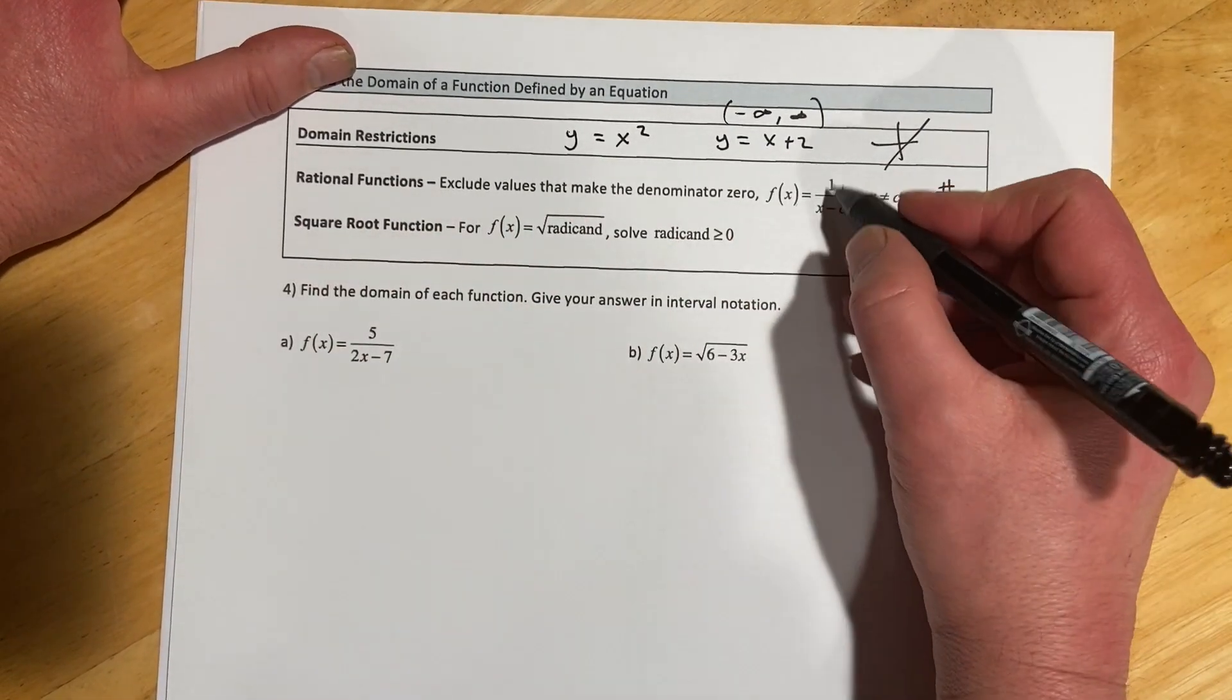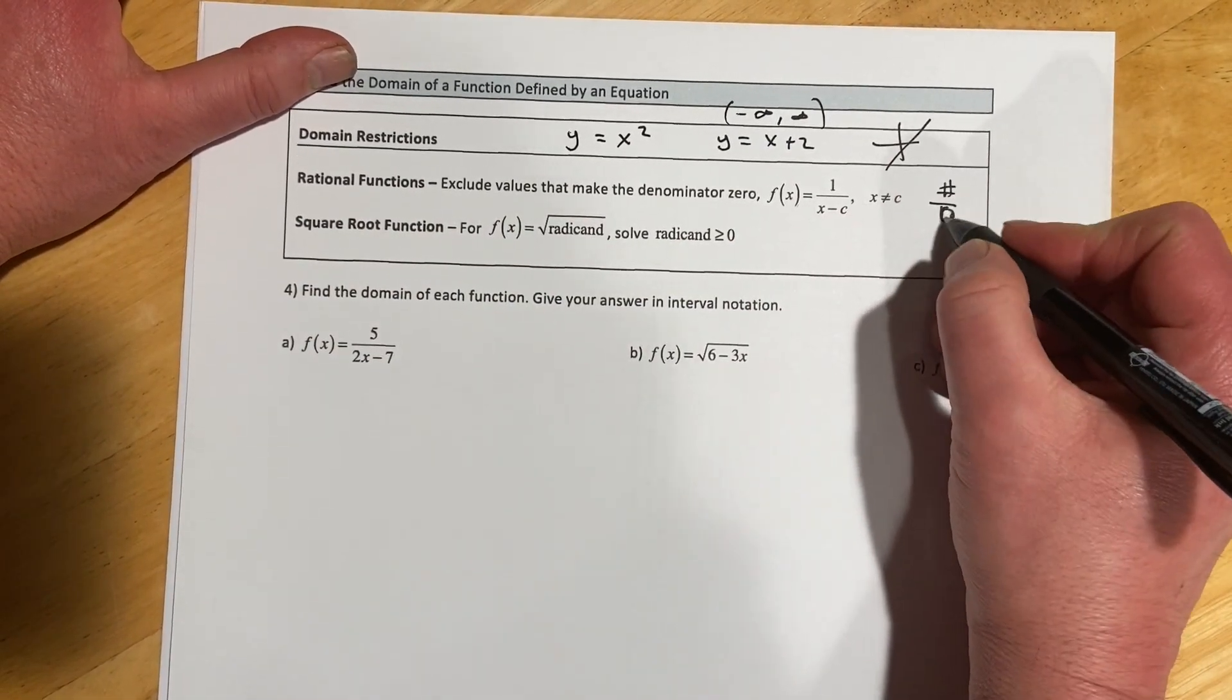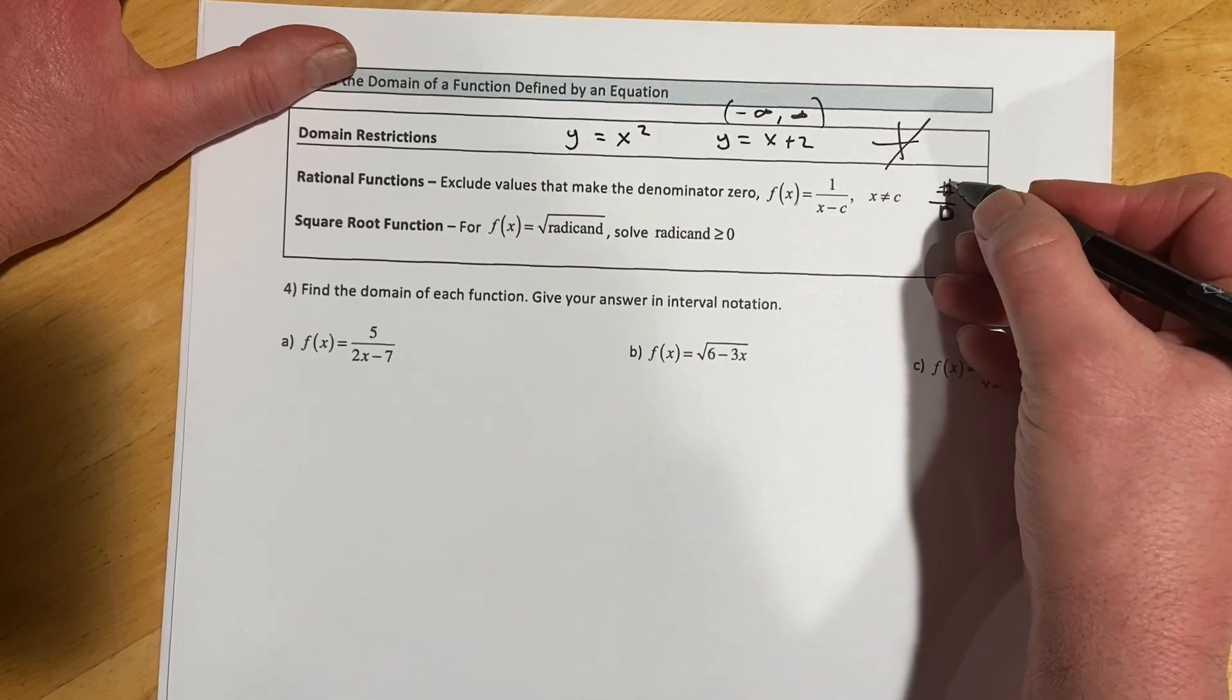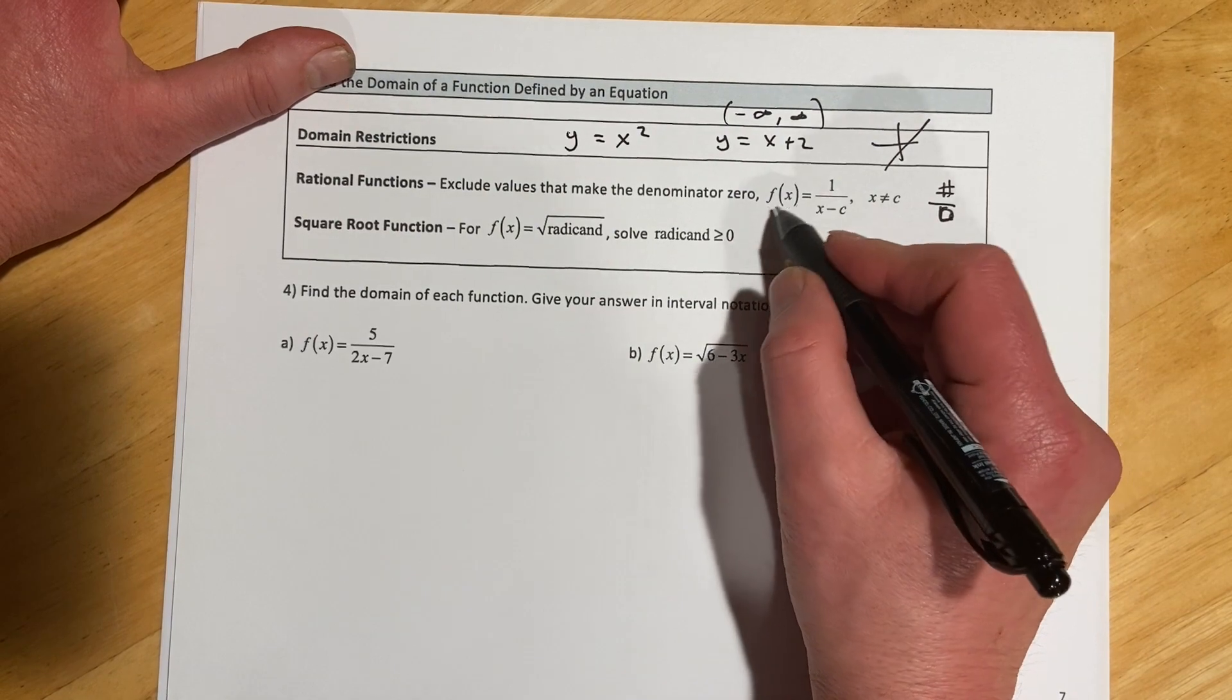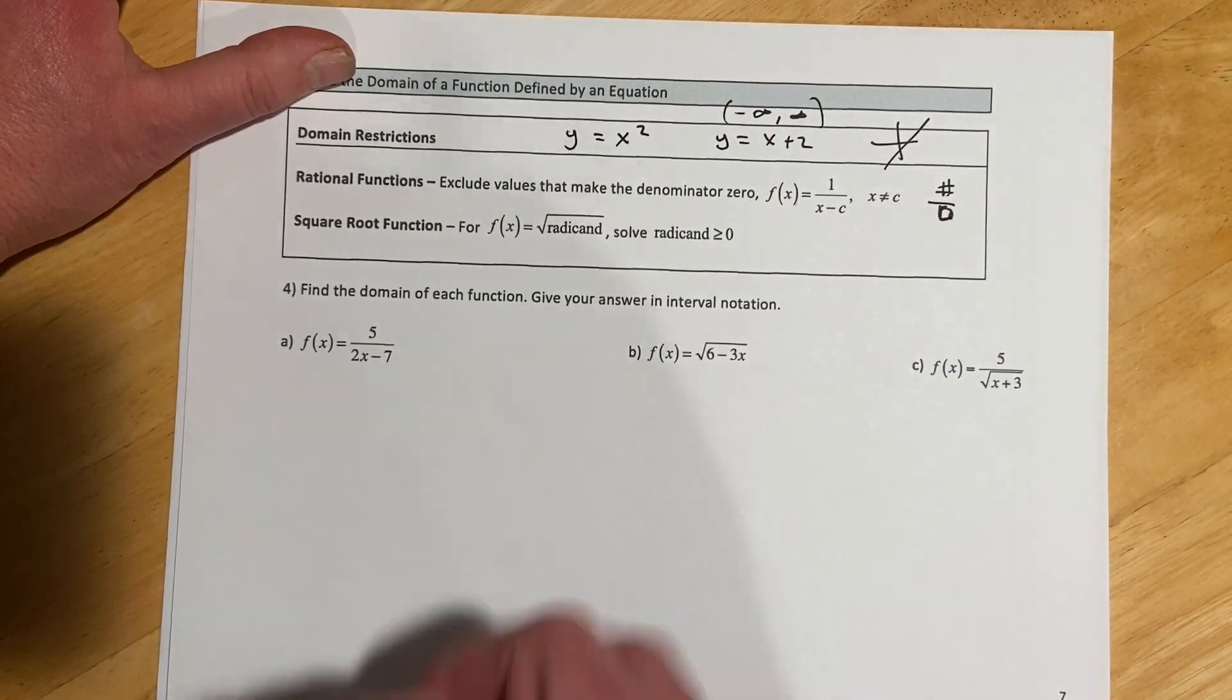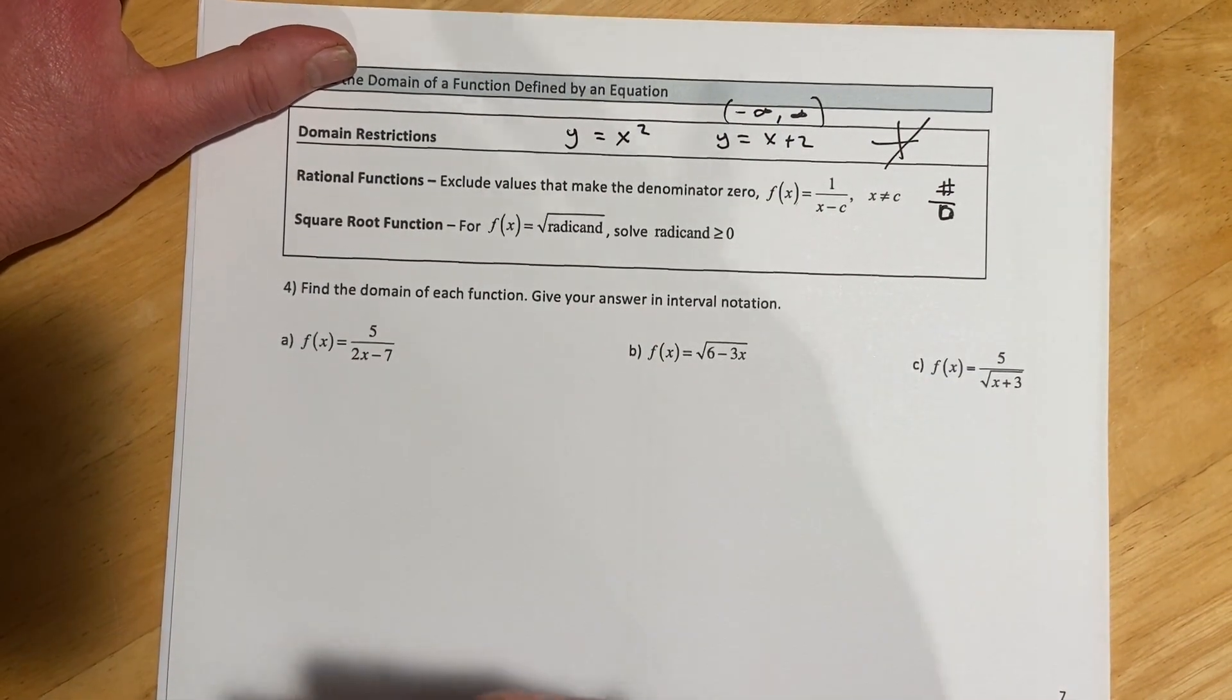Rational functions, though, so rational functions have the problem of division by zero. So if I try to take a number and divide it by zero, that comes up undefined. So when we're looking at a rational, we're going to have to try to figure out what makes the denominator zero, and then exclude that from our domain.